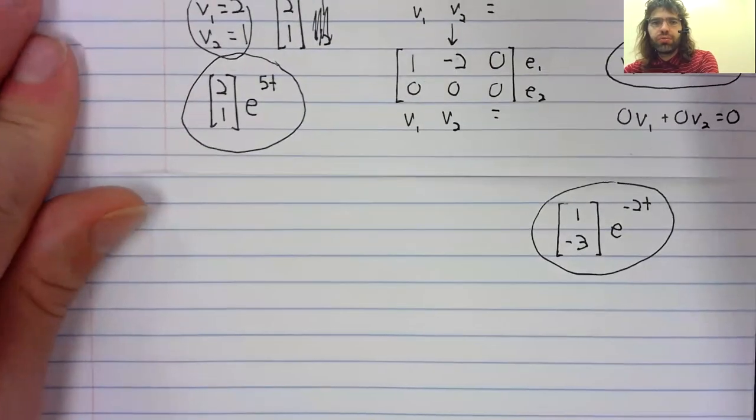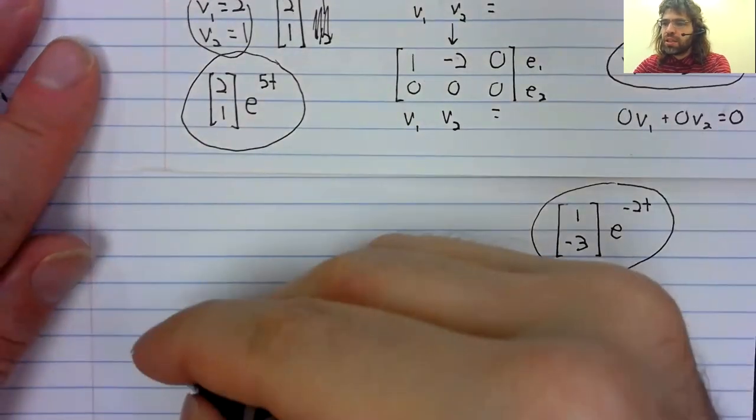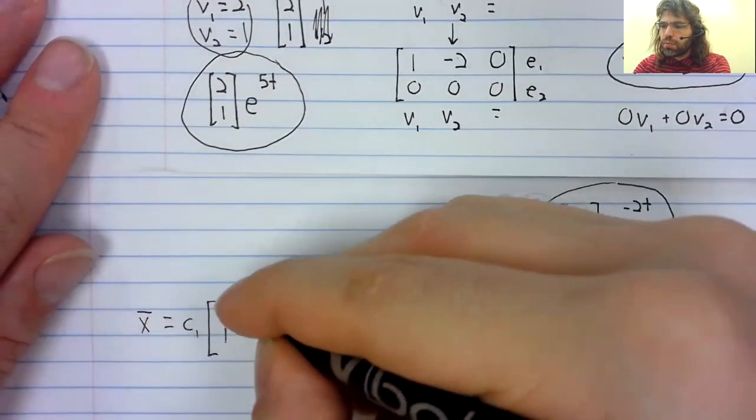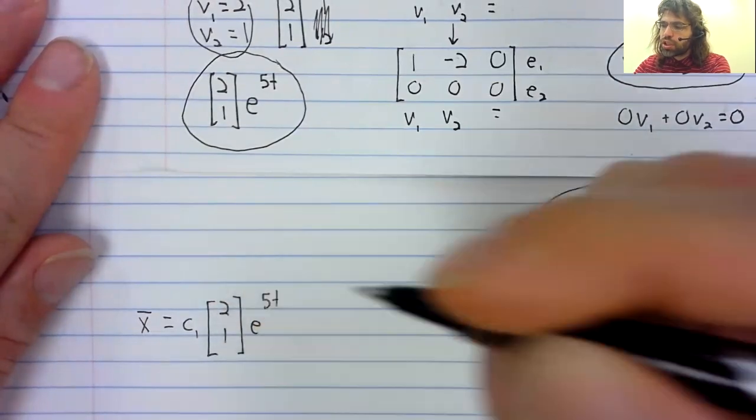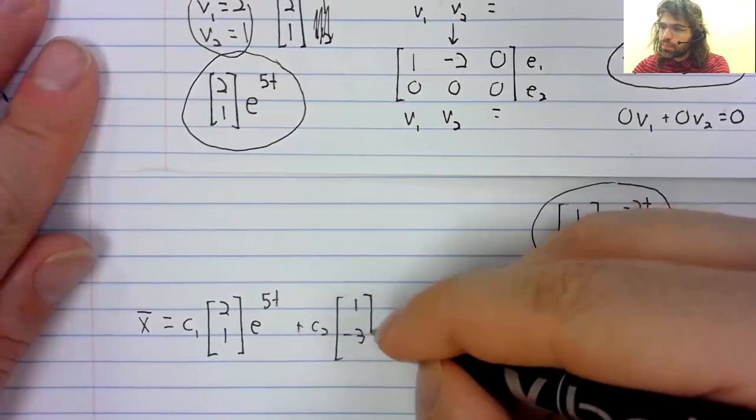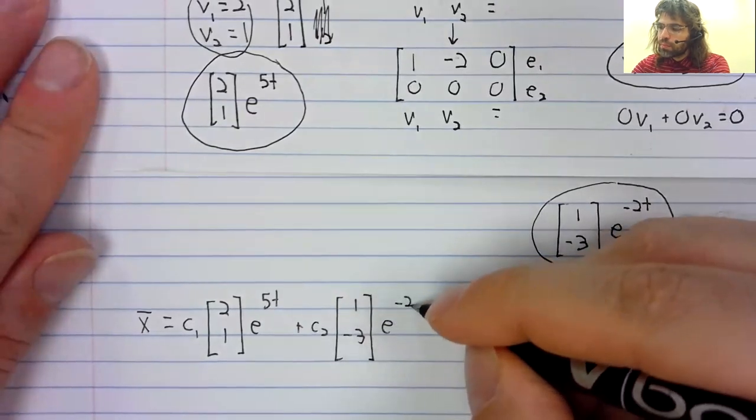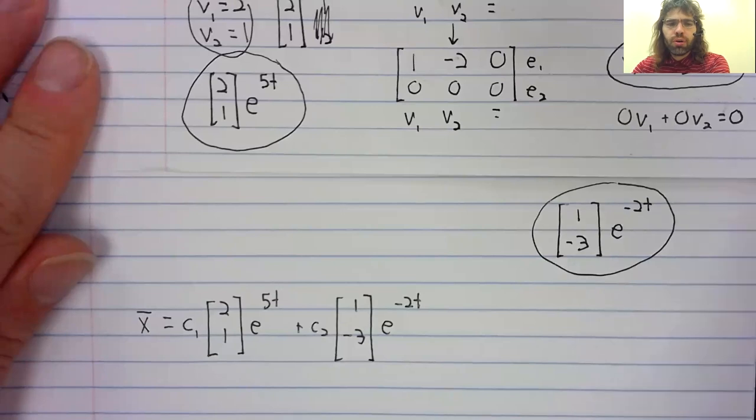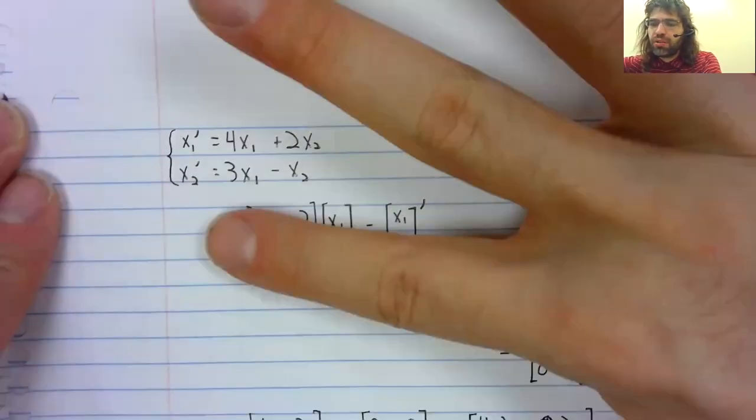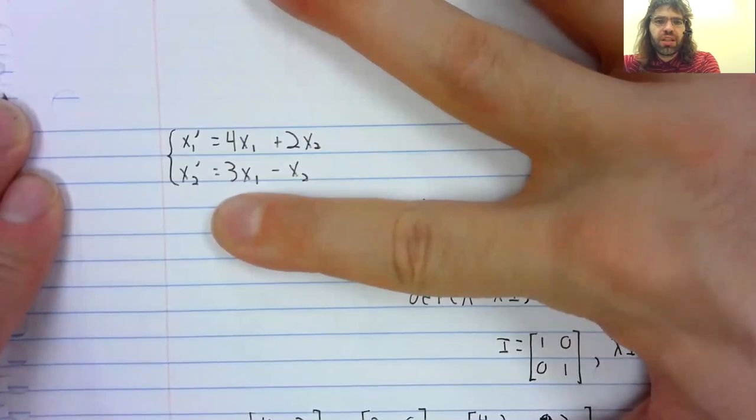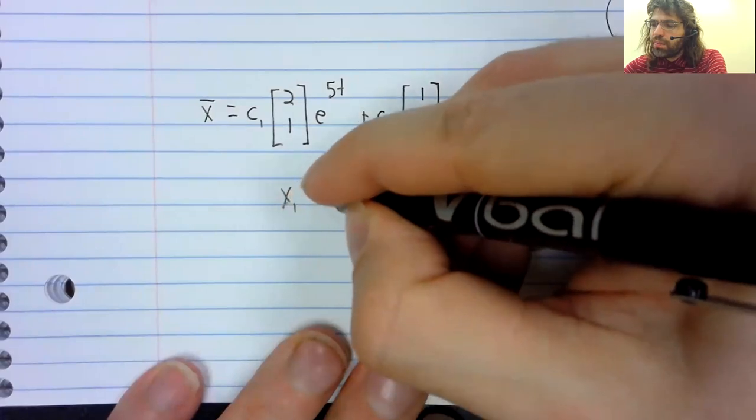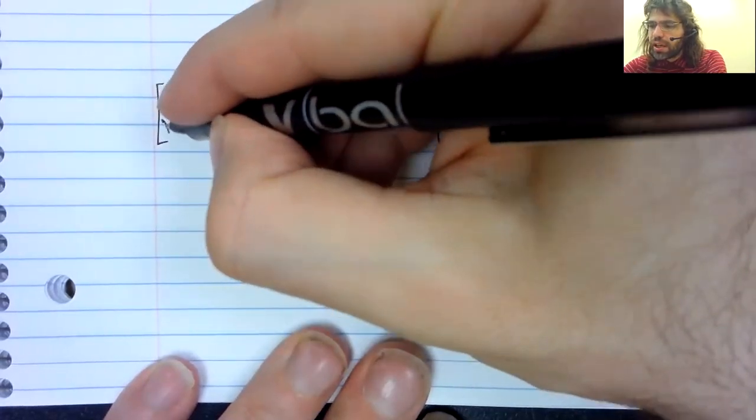We have two solutions. That was all we needed. We can now write down a general solution. If you prefer, because this original differential equation wasn't written in terms of matrices, it was written as a system like this, you could go down here. X equals X one, X two.